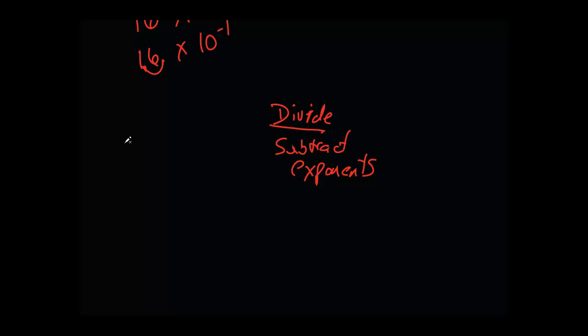So, if I had 4.03 times 10 to the minus 2, and I divide that by 1.7 times 10 to the negative 8. Let's not worry about the base 10 and the exponents for now.